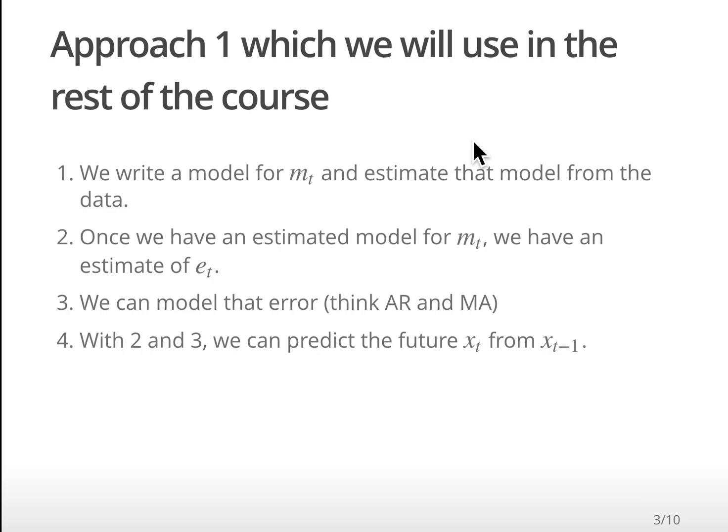The first approach is that we would try to come up with a model for that mean. Now what's an example of that model? Well, you've done linear regression, right? We could have a bunch of covariates and so we try to explain the mean of our data with the covariate values—maybe temperatures, salinity, or other species present, whatever.